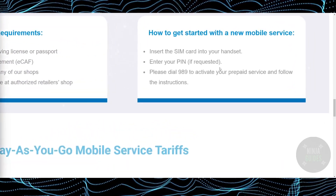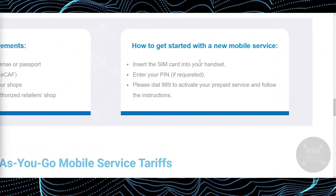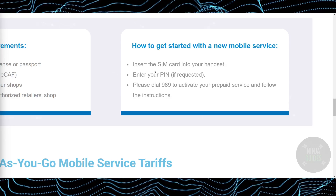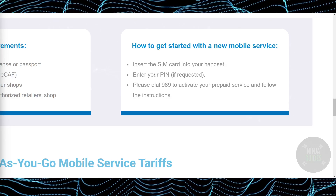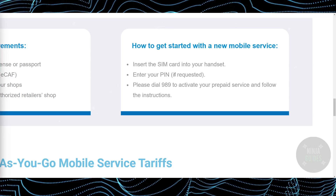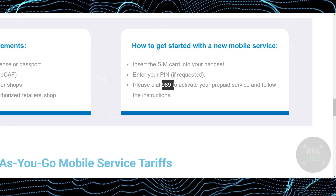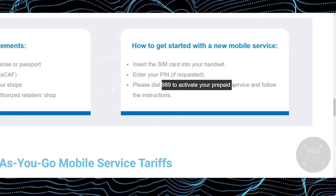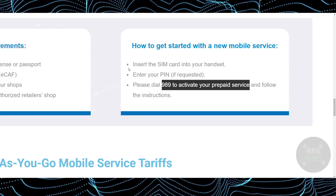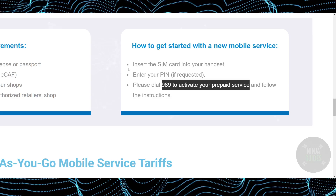First things first, you need to insert the SIM card into your headset. After inserting that, you just have to enter your PIN if it is requested. If it is not requested, you just have to dial 989 to activate your prepaid service and follow the instructions.